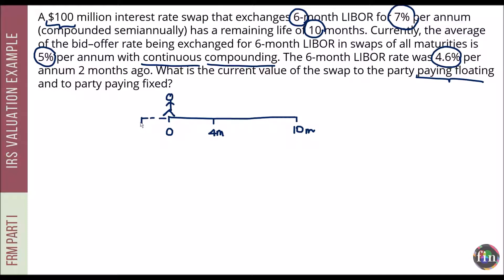The last exchange of cash flows happened two months ago, at which point the LIBOR was 4.6%. Valuing from the perspective of the party paying floating, floating cash flows go downward and fixed cash flows go upward. Using the bond method, this is the difference between two bonds: this party is long the fixed rate bond and short the floating rate bond.